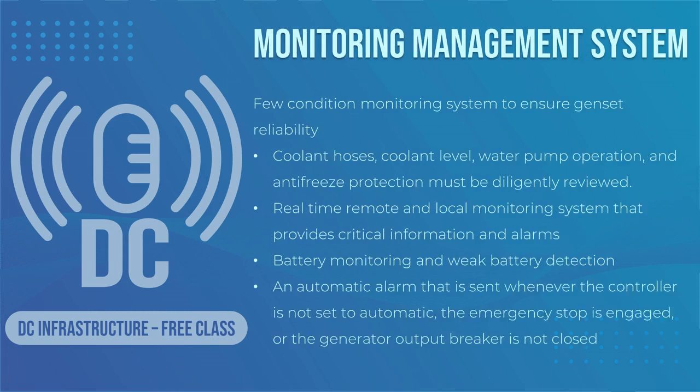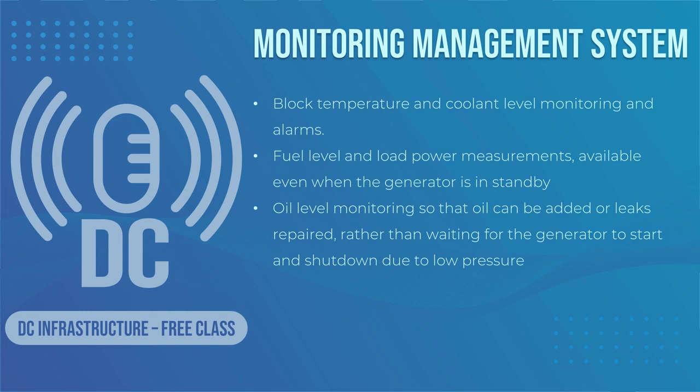To ensure reliability of your generator, a management system that monitors all generator subsystems and provides early warning through preventative maintenance reminders is required. Key items include: coolant hoses, coolant level, water pump operation, and antifreeze protection reviewed diligently; a real-time remote and local monitoring system providing critical information and alarms at every interface; battery monitoring and weak battery detection; an automatic alarm sent whenever the controller is not set to automatic, the emergency stop is engaged, or the generator output breaker is not closed; block temperature and coolant level monitoring and alarms; fuel level and load power measurements available even when the generator is in standby; and oil level monitoring so that oil can be added or leaks repaired rather than waiting for the generator to shut down due to low pressure.